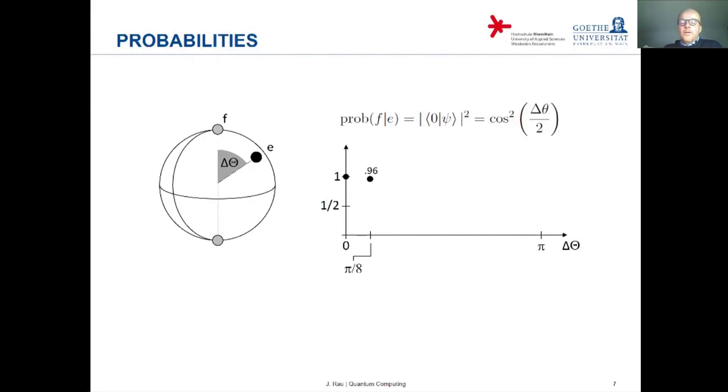If you go sort of one eighth of a semicircle, then this probability is 0.96. If you go as one sixth of the semicircle, it's a bit smaller, still a quarter of a semicircle and so on. Get smaller and smaller.